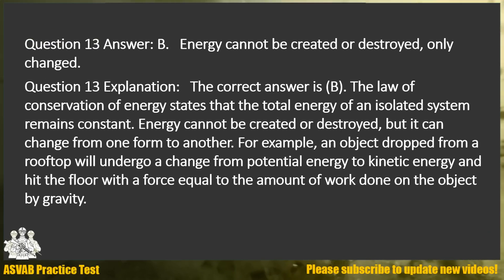Answer: B. Energy cannot be created or destroyed, only changed. Explanation: The correct answer is B. The law of conservation of energy states that the total energy of an isolated system remains constant. Energy cannot be created or destroyed, but it can change from one form to another. For example, an object dropped from a rooftop will undergo a change from potential energy to kinetic energy and hit the floor with a force equal to the amount of work done on the object by gravity.